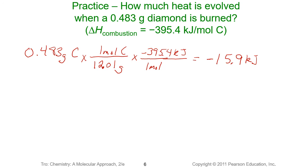This is actually a pretty large diamond. So 0.2 grams is a carat, so this is over a two carat diamond to get negative 15.9 kilojoules of heat. I think I'm going to stick to burning propane instead of diamond at my house anyhow.